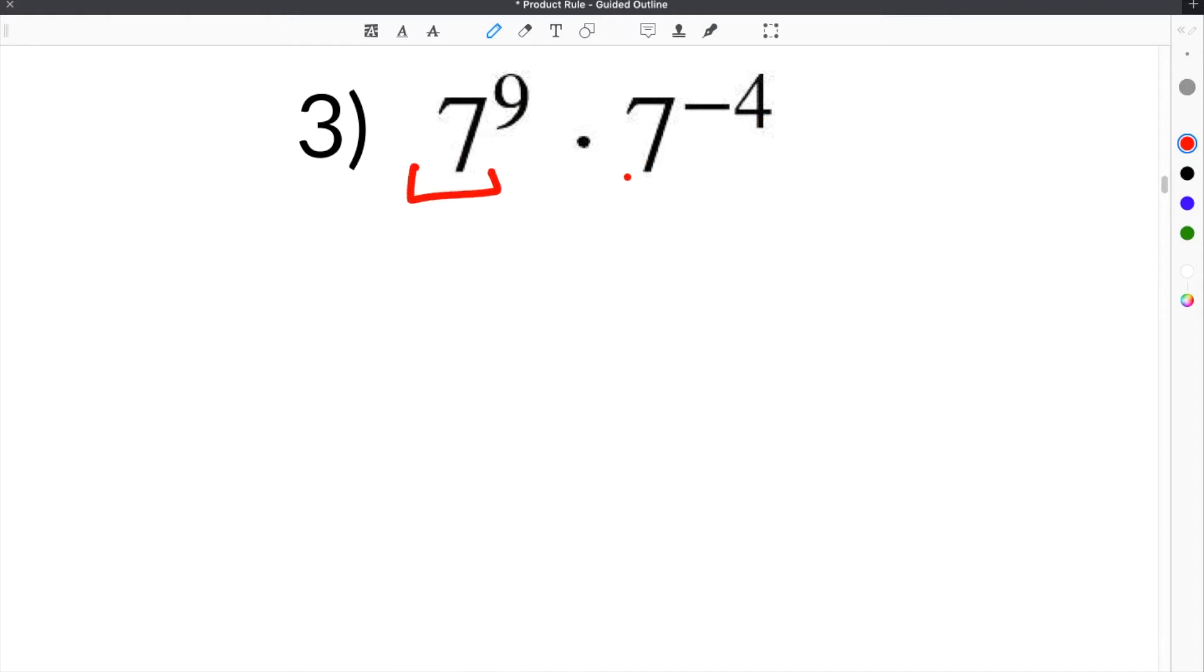Once again, we have our base, which is 7, and then we need to add the exponents. When we add the exponents, we have to include everything in the exponent. We have to include this negative. So, it will be 9 plus negative 4.